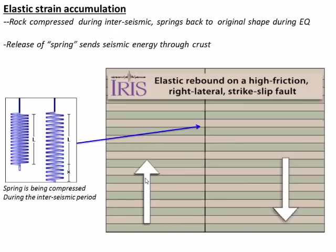That energy comes from a process called elastic strain accumulation. We can think of rocks as acting like a spring. In the interseismic period, as the plates continue to move past each other, the rocks near the fault get compressed and loaded just like a spring being squished. Stress builds and builds, and then eventually the stress becomes too much and the fault ruptures.